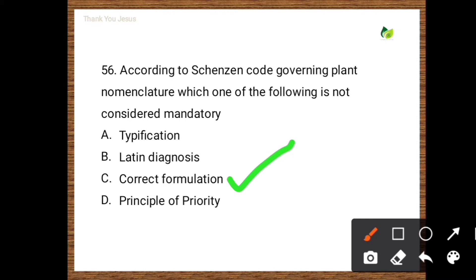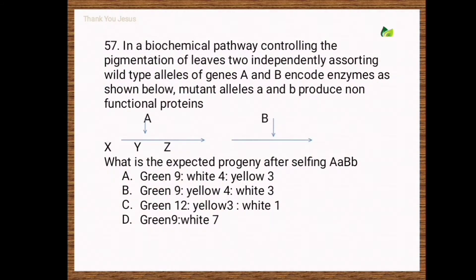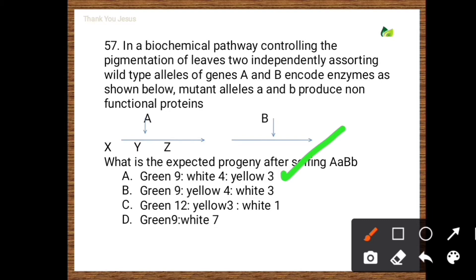Next question: In a biochemical pathway controlling the pigmentation of leaves, two independently assorting wild-type alleles of genes A and B encode enzymes. Mutant alleles a and b produce non-functional proteins. What is the expected progeny after selfing AaBb? Options: green 9, white 4, yellow 3; green 9, yellow 4, white 3; green 12, yellow 3, white 1; green 9, white 7. The correct option is the first one — green 9, white 4, yellow 3.